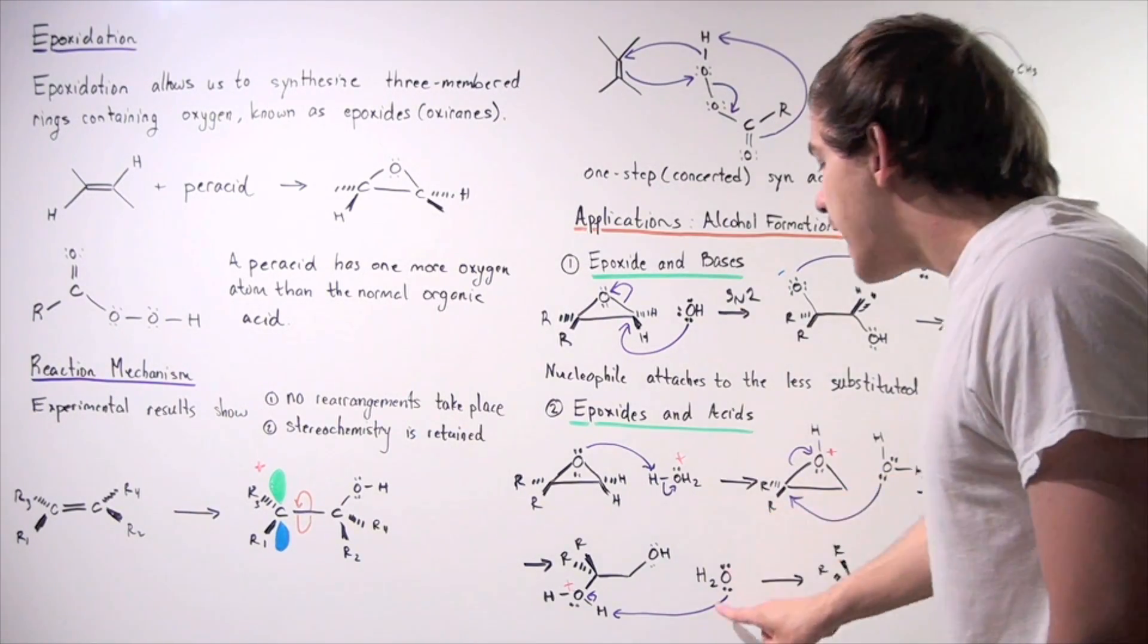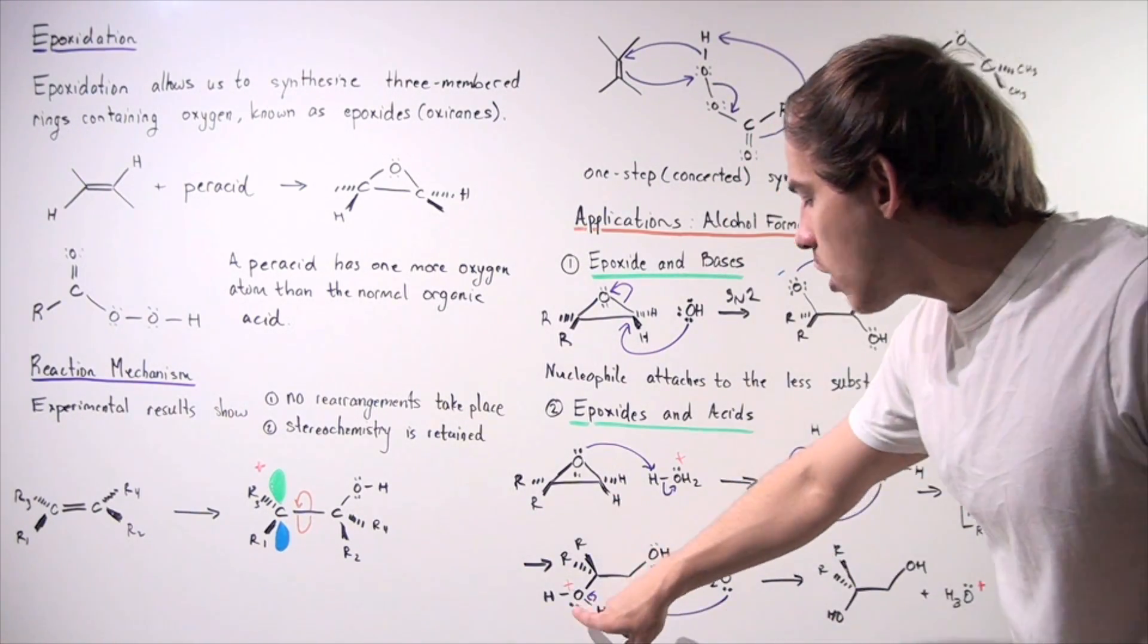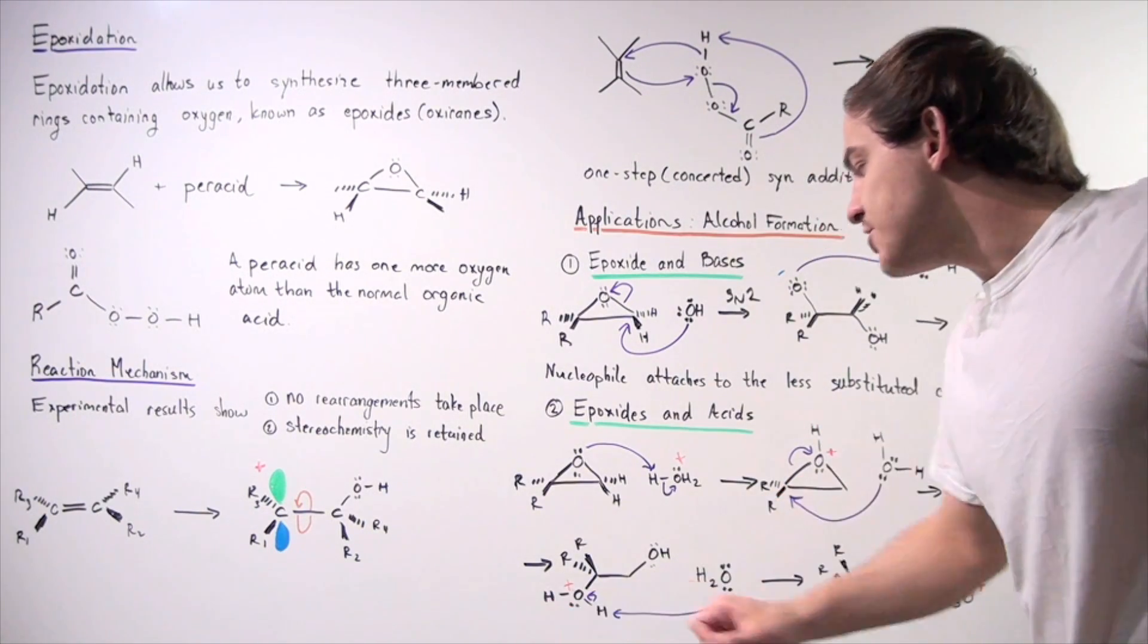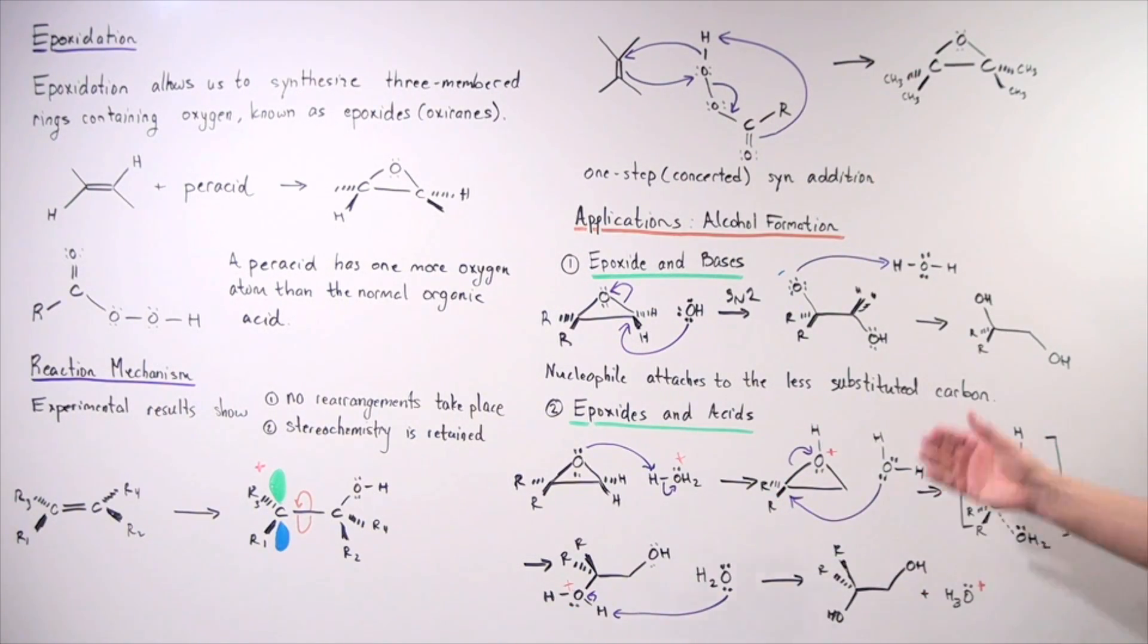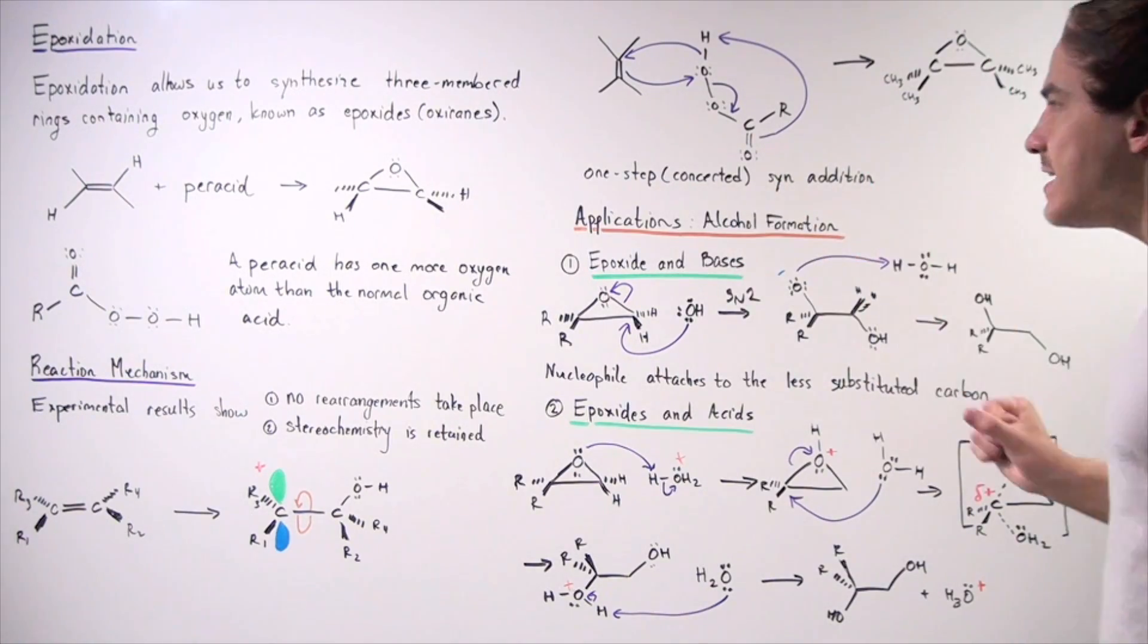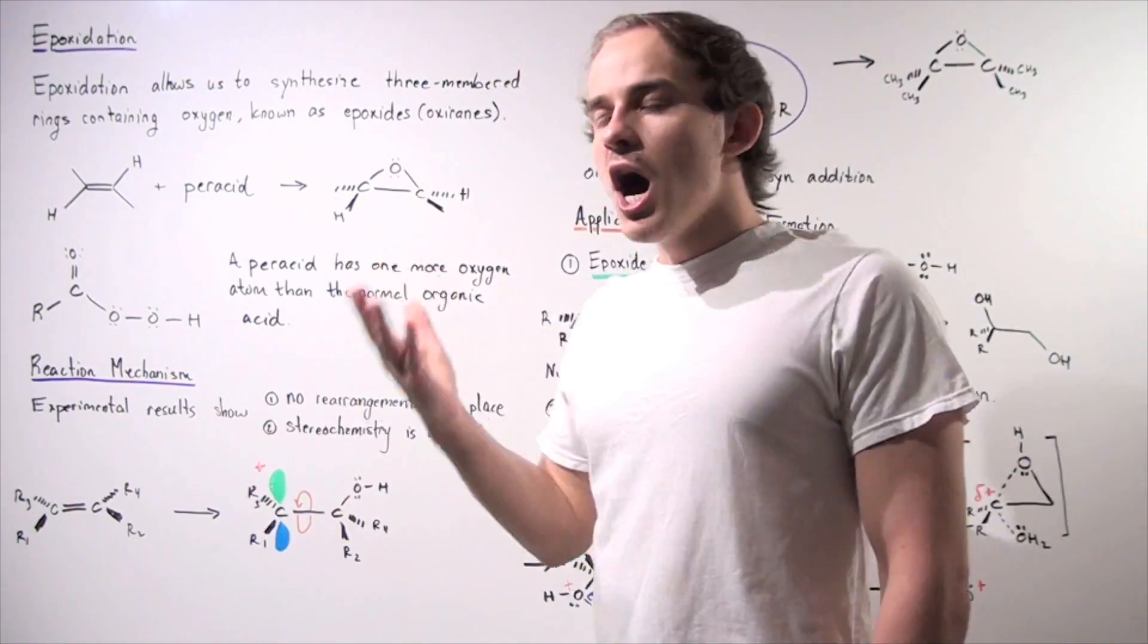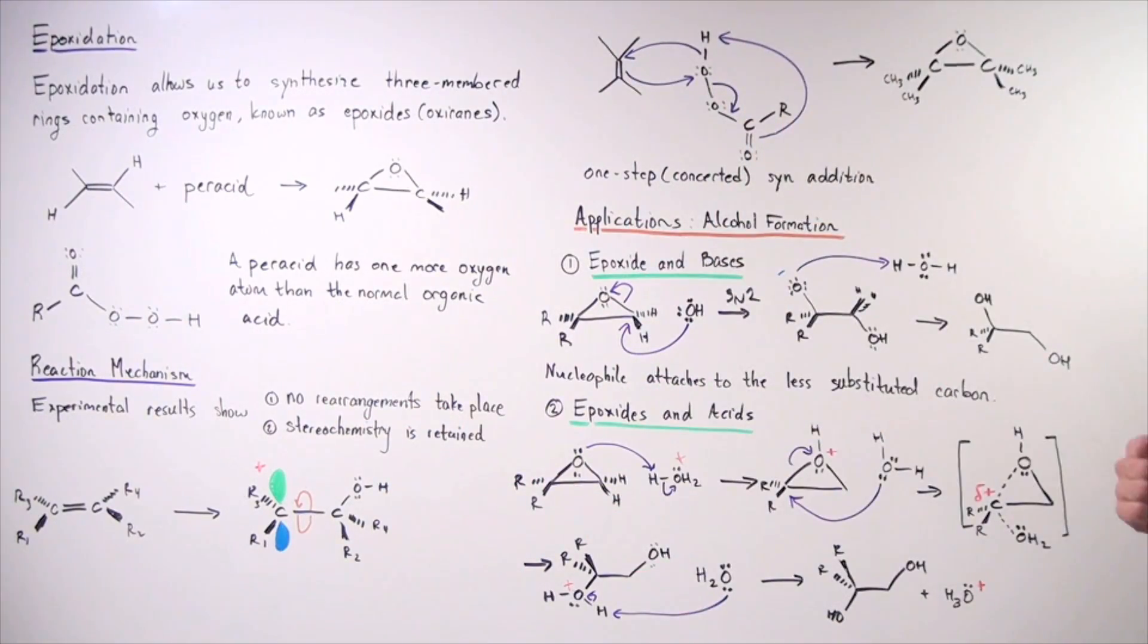So this will be our intermediate formed with a positive charge on the oxygen. And finally, now another water molecule can take away this H atom, forming our final alcohol. So once again, some applications of our epoxidation reactions include the formation of alcohols, of 1,2-diols.